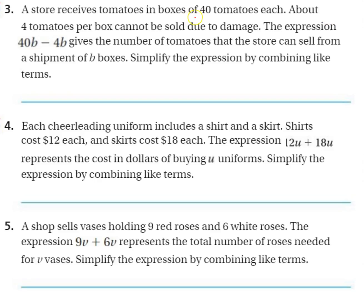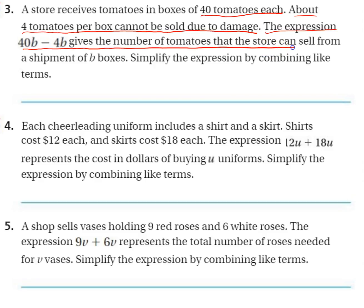A store receives tomatoes in a box of 40 tomatoes each. About 4 tomatoes per box cannot be sold due to damage — they're bruised, just in bad condition, they won't sell. So the expression 40B minus 4B gives the number of tomatoes the store can sell from a shipment of B boxes.